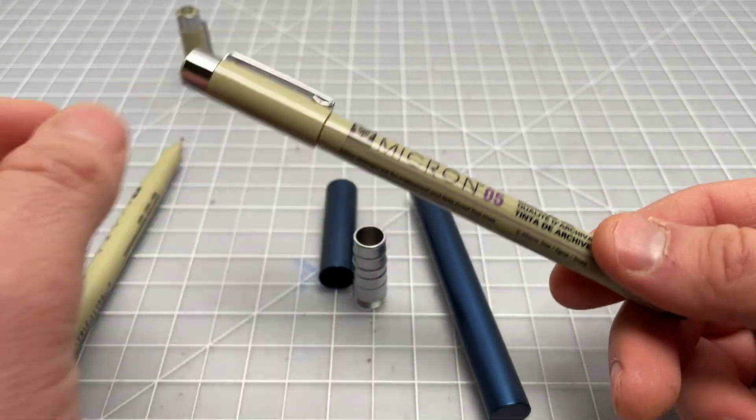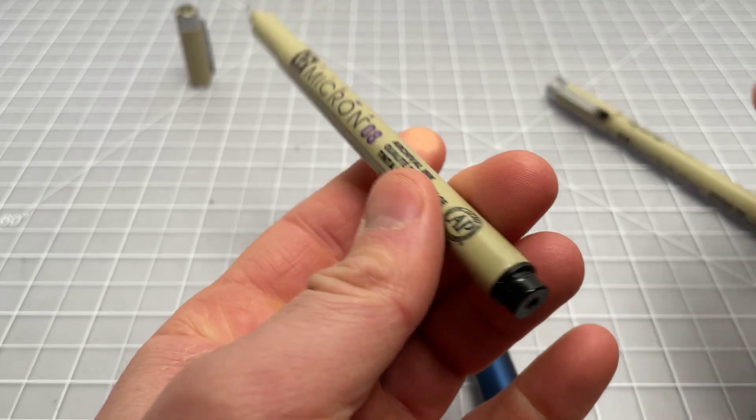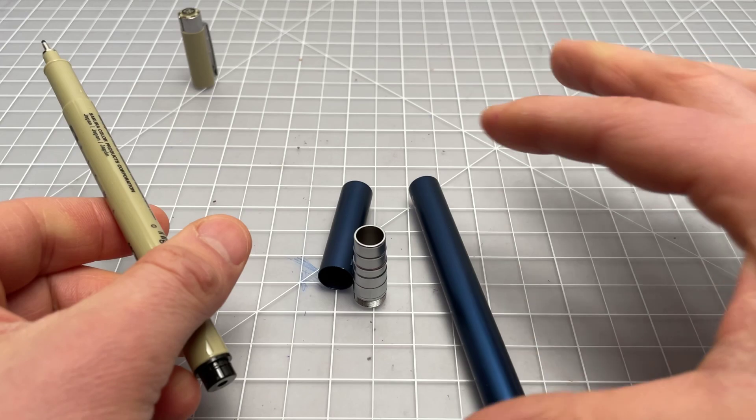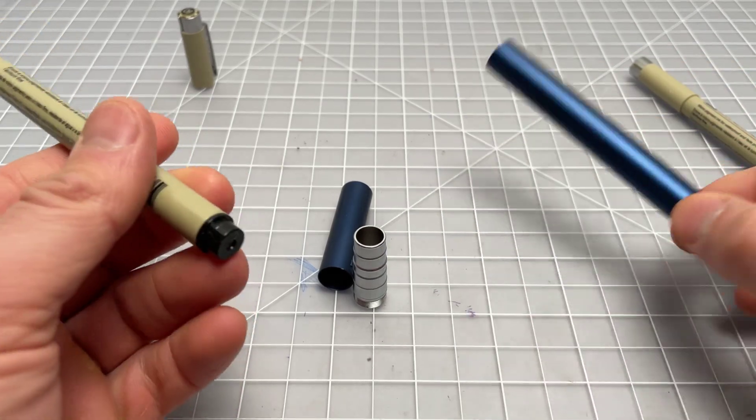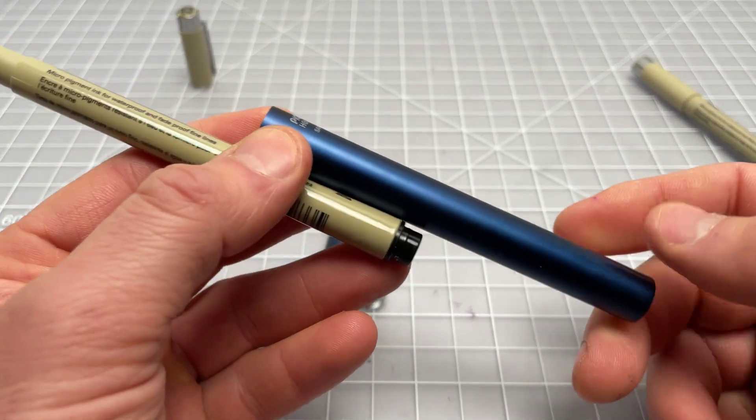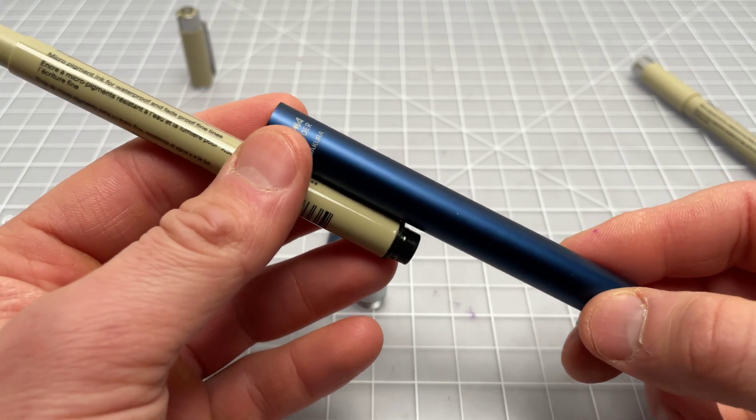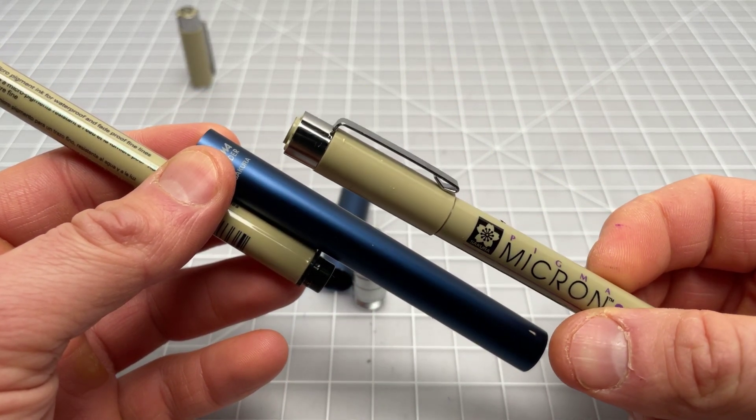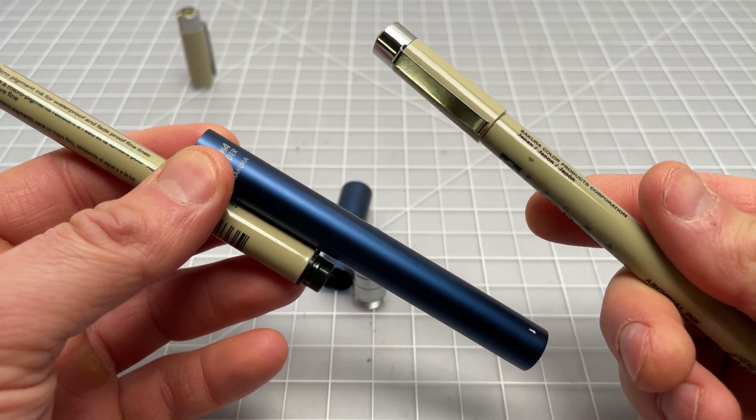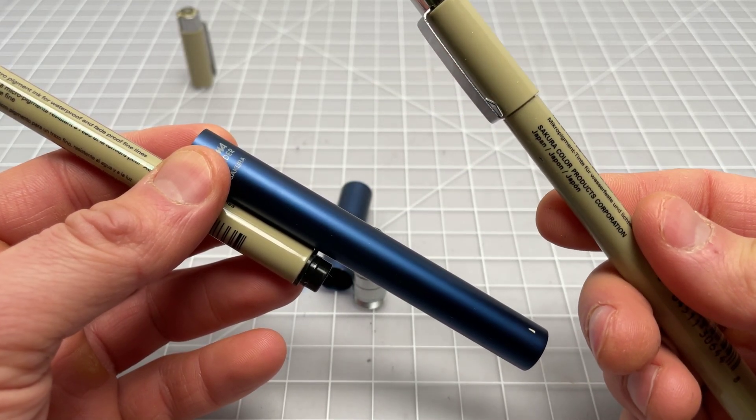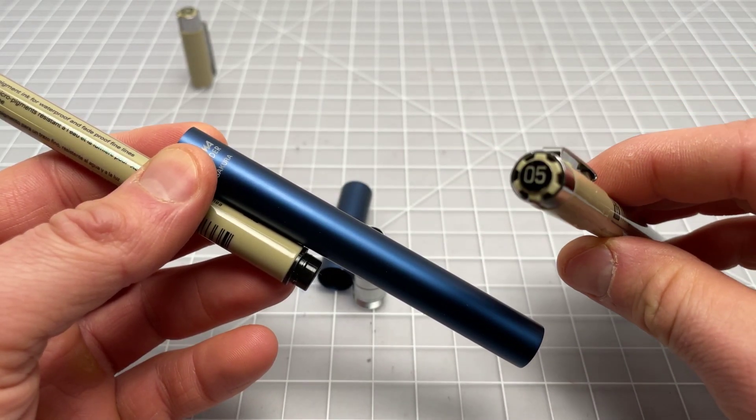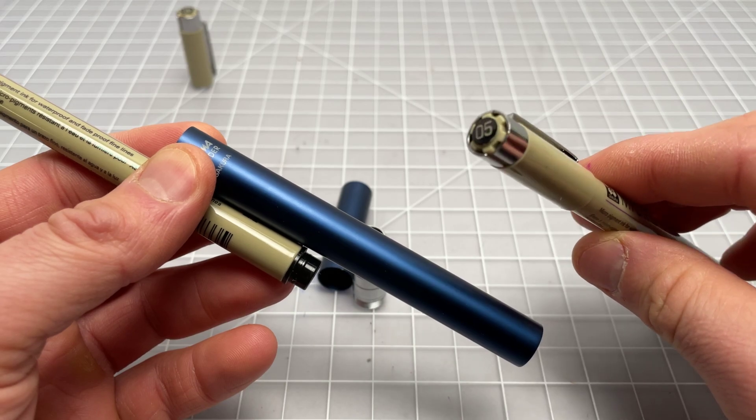Here is a Micron in the 0.5. Here it is in the 0.8. You can see they're exactly the same. You will note that there's a clip here. The holder does not have a clip. I'm guessing people use these most of the time at the desk. So this clip doesn't seem super useful. I've never clipped one of these into anything.